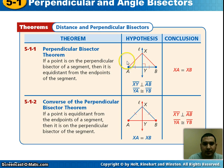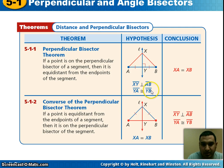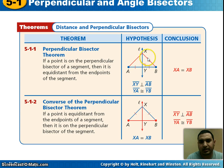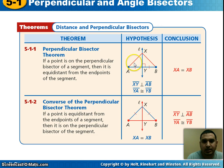So if you have this: segment XY is perpendicular to segment AB, and you also know that segment YA is congruent to segment YB, then your conclusion would be that the distance from X to A is equal to the distance from X to B. So X is equidistant from A and B.